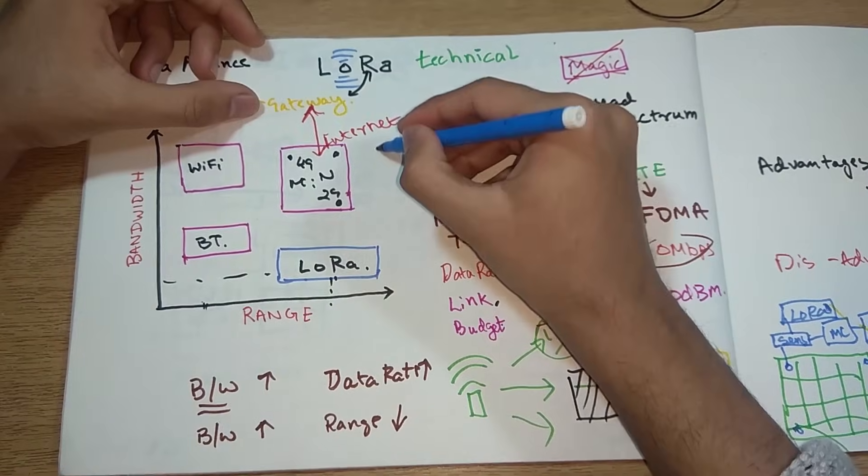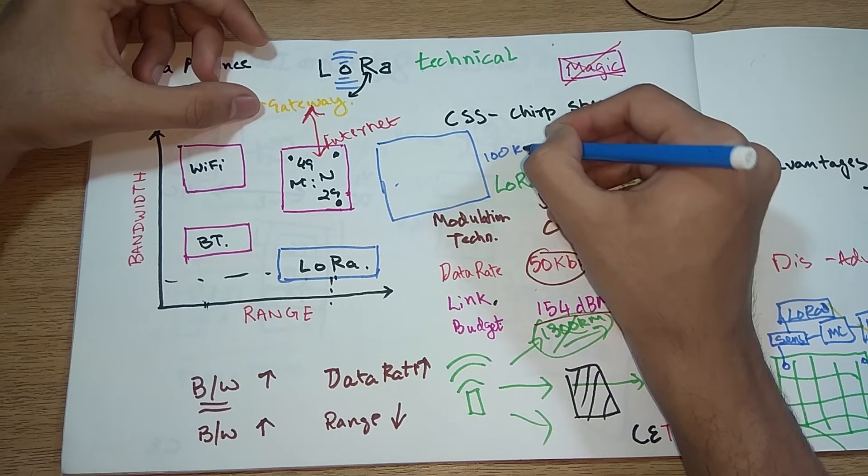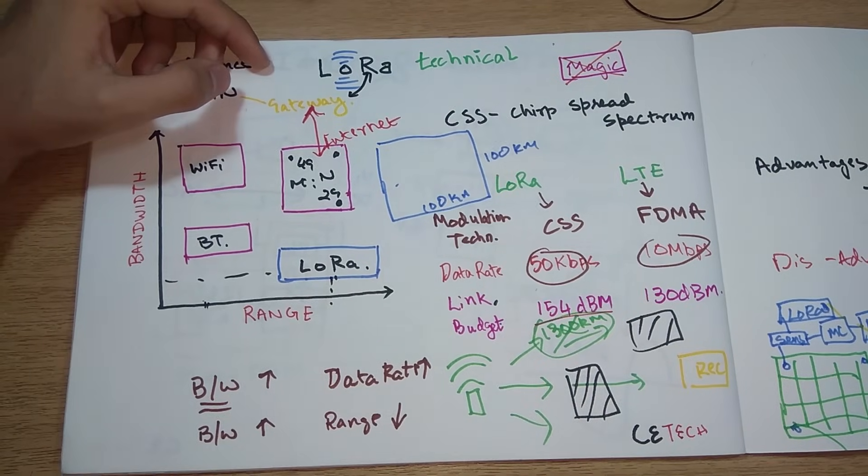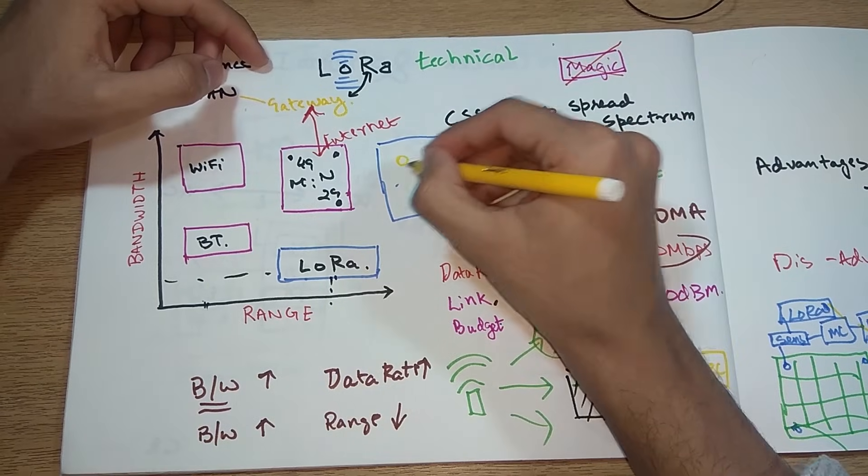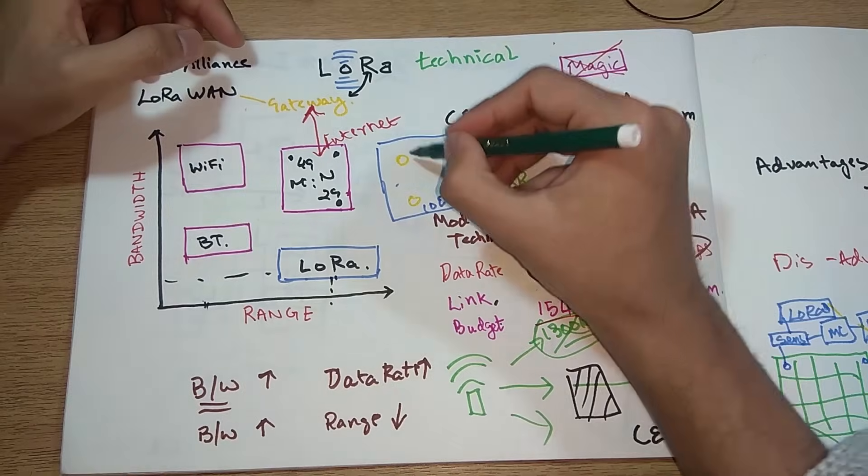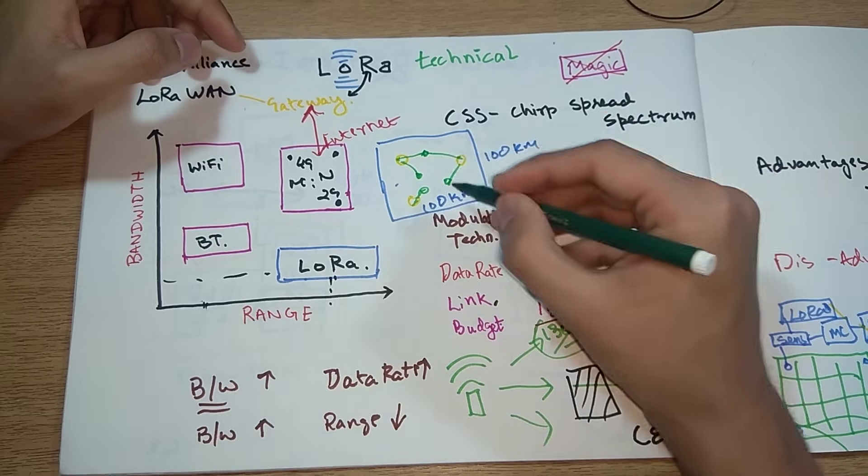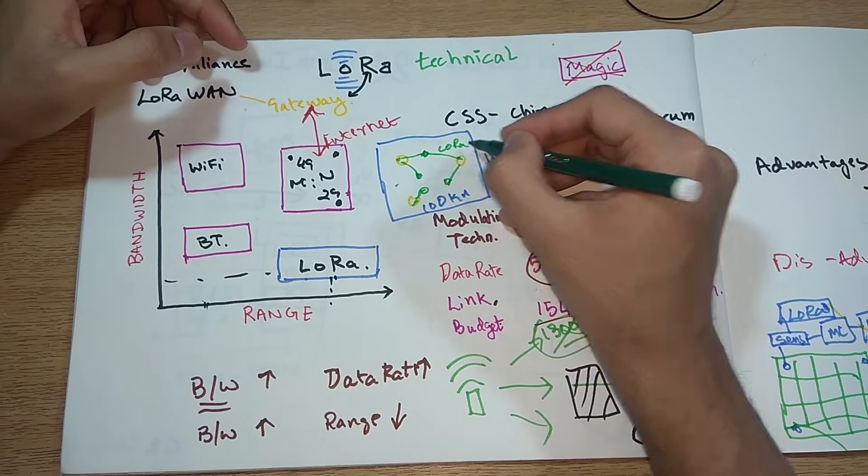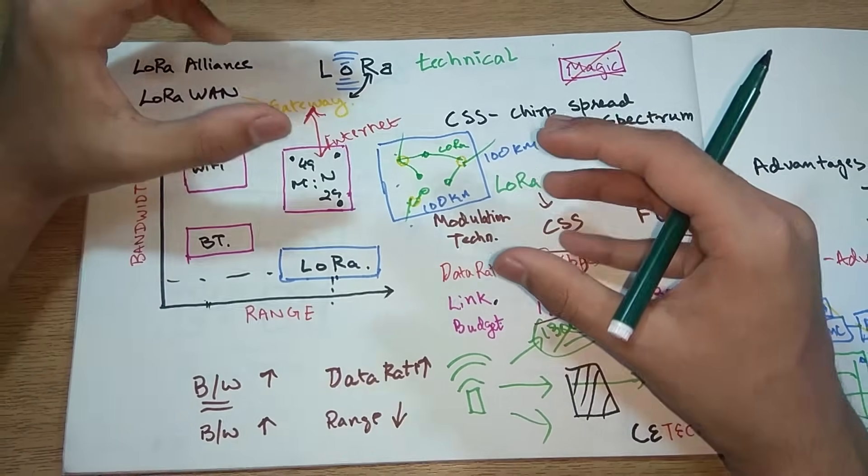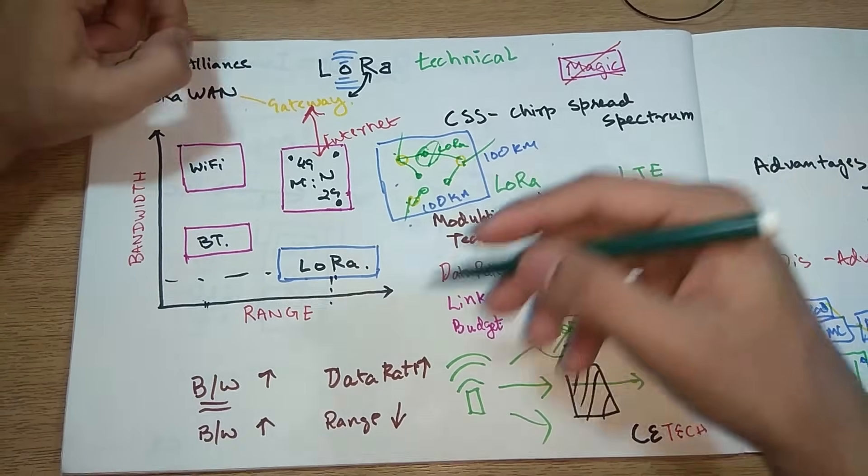What a gateway does is it connects LoRa with 4G, as in internet. If you have a big area, this is like say 100 kilometers by 100 kilometers, we will have gateways somewhere here and there. All the sensor nodes will connect to these gateways using LoRa technology and these nodes will be connected to internet directly. These are like base station towers in mobile networks.